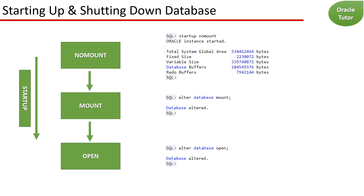Once the database instance has been started, you can mount the database. When you mount the database, the Oracle software performs the following tasks: associates the database with the database instance, opens and reads the control files, and obtains the names and statuses of the data files and online redo log files. The mount stage does not check to verify the existence of the data files and online redo log files.